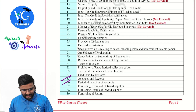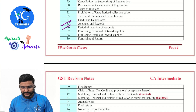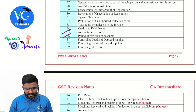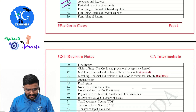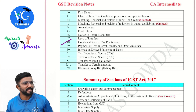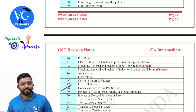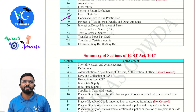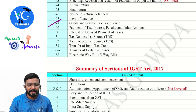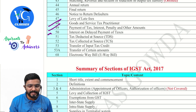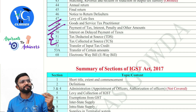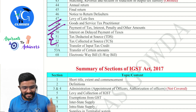Previously we discussed till section 36 — that is books of accounts and records. Then sections 37 to 48 will be covered in the last chapter, which is the return chapter. Section 49 was covered in the previous chapter, that is payment along with interest. Now we are covering sections 51 and 52 of CGST in this chapter.